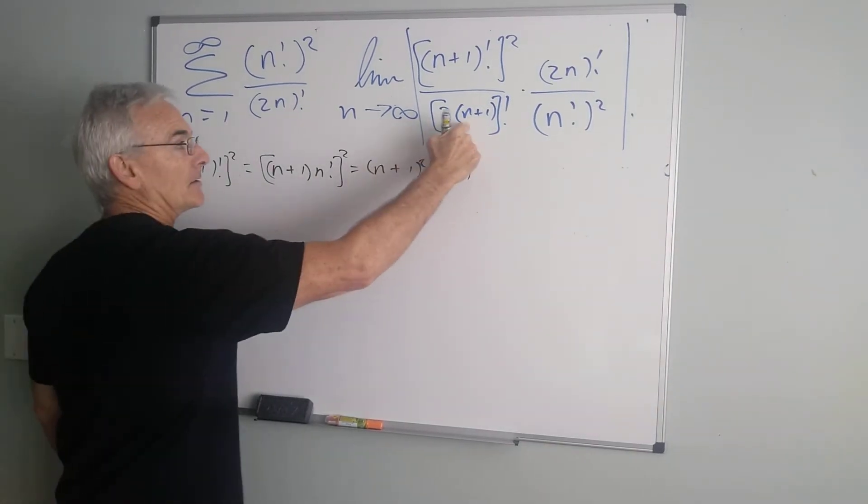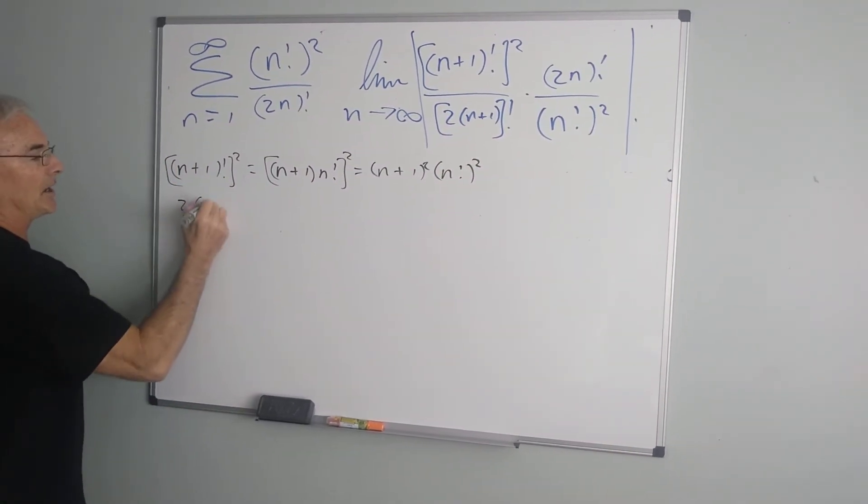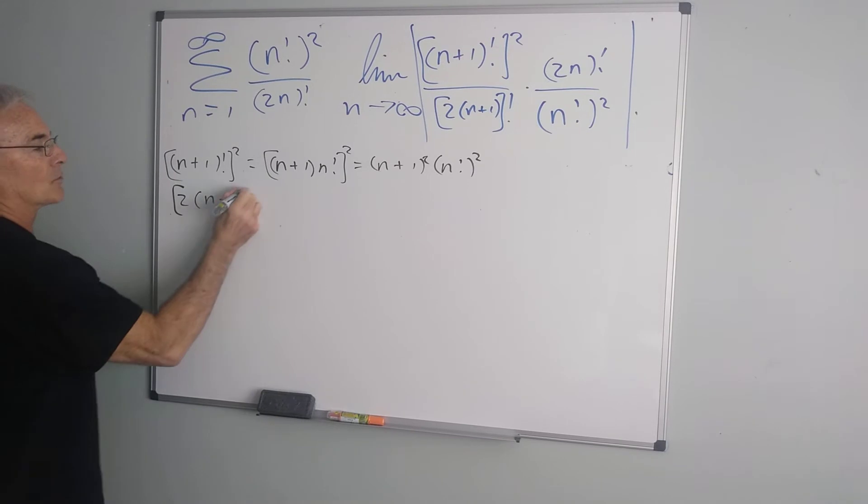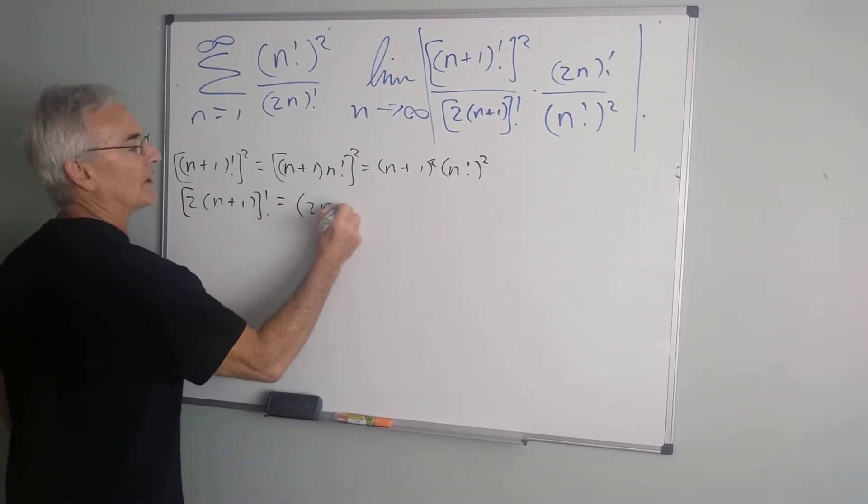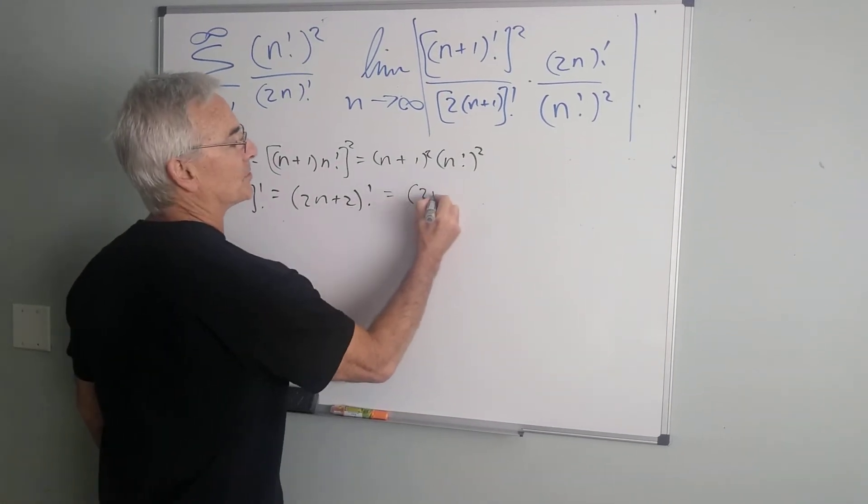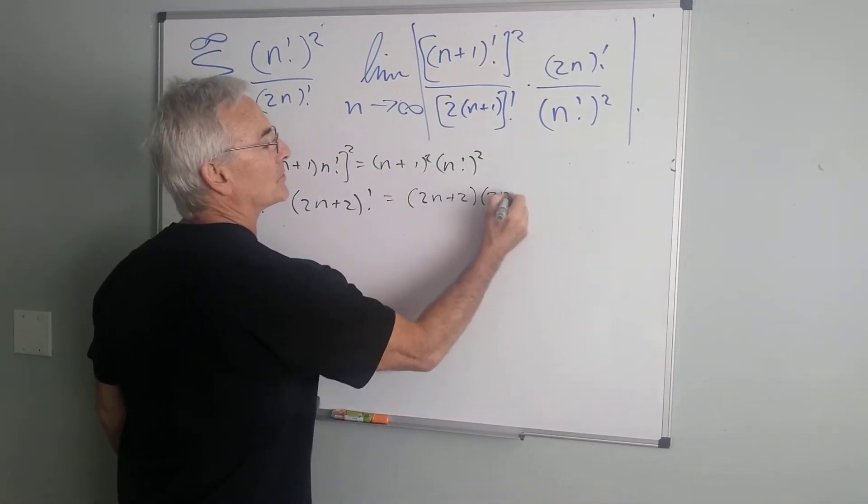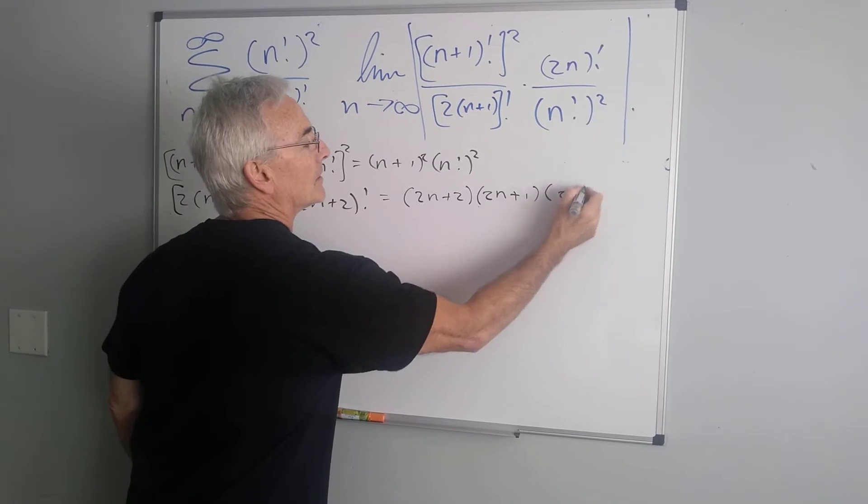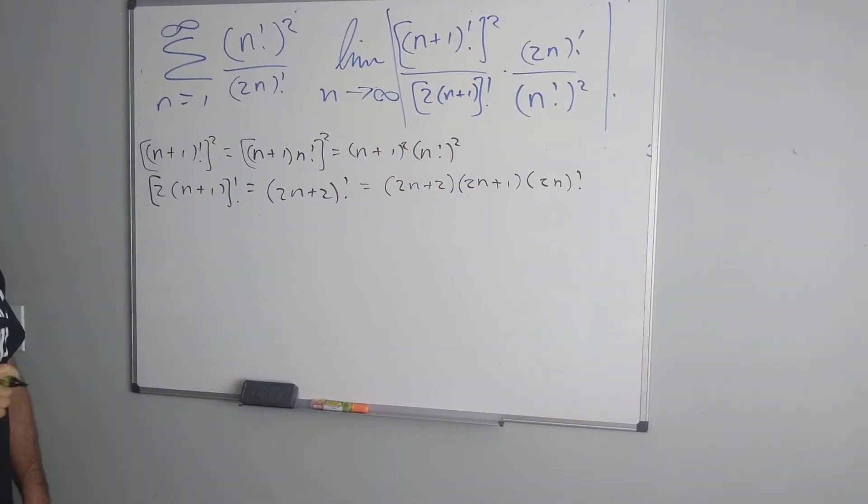Secondly, this term here, which is 2 times n plus 1, quantity factorial, is simply 2n plus 2, factorial, which is 2n plus 2, 2n plus 1, 2n, quantity factorial. So,